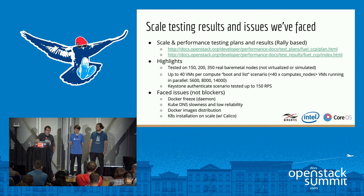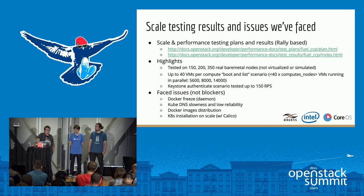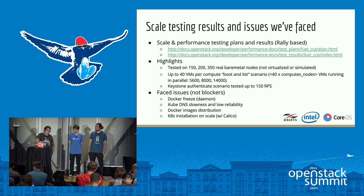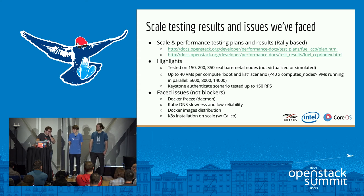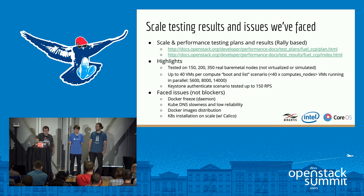Starting from around 50 nodes, we faced kubeDNS slowness and very low reliability — it was failing and not working even at 50 nodes under load. That was Kubernetes 1.2 about half a year ago. With newer versions it improved dramatically. In addition to upstream improvements, some made by the Kubernetes team here, we run dnsmasq on each node to cache DNS requests to kubeDNS locally, decreasing the load on kubeDNS.